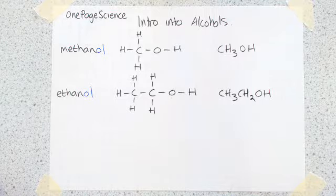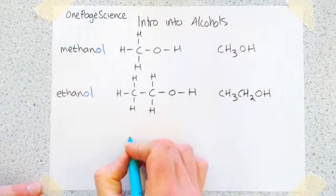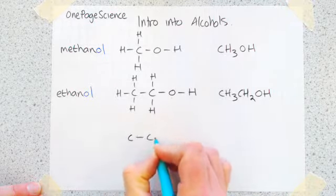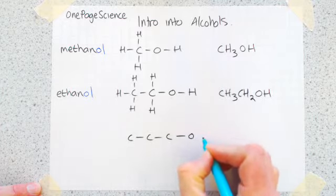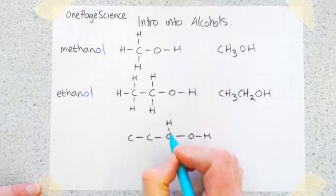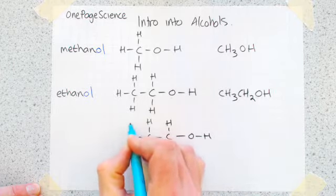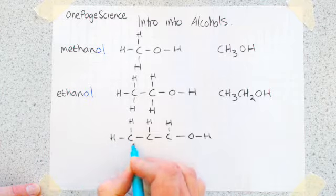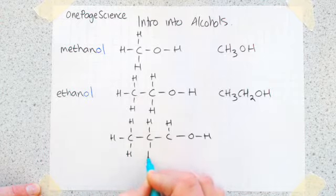And then carry on going, same method. So this time three carbons, one, two, three. We've still got our OH. We then go along and put hydrogens on each of our carbons to make sure that each carbon's got four bonds.